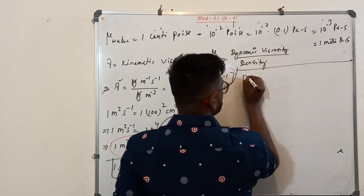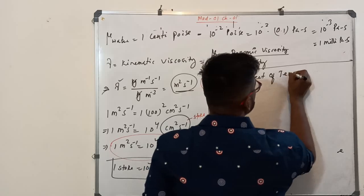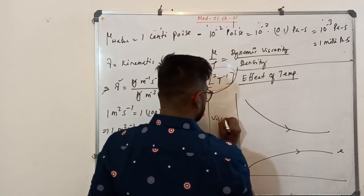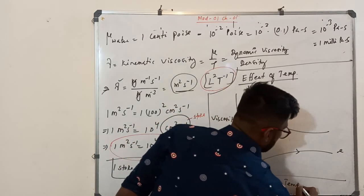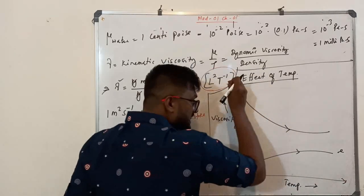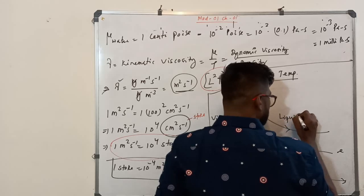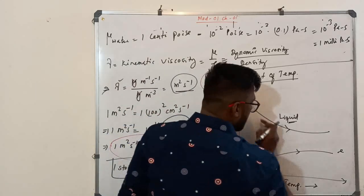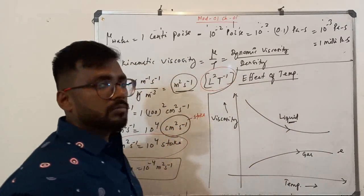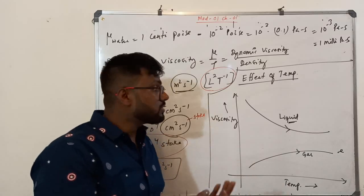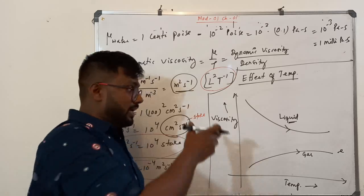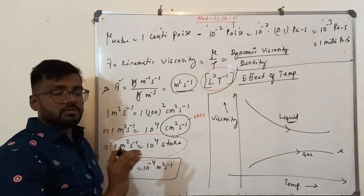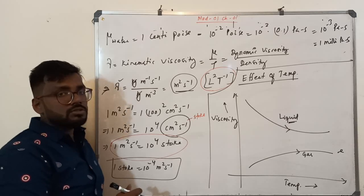Then we studied the effect of temperature on viscosity. We drew a graph with viscosity on one axis and temperature on the other. As temperature increases, the viscosity of a liquid decreases. As temperature increases, the viscosity of a gas increases. This is because in gases, molecular momentum force dominates the cohesive force, while in liquids, the cohesive force dominates the molecular momentum force. This video was meant as a short revision covering all the details you require.